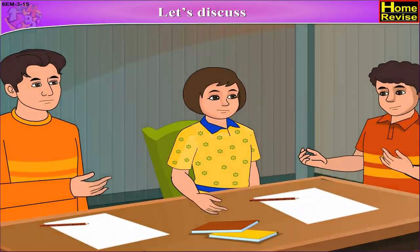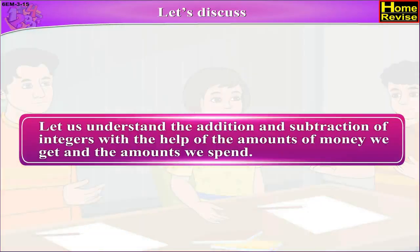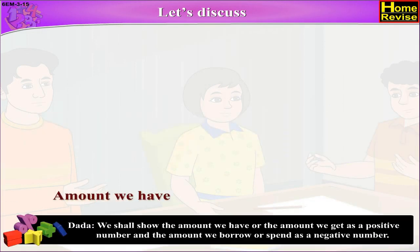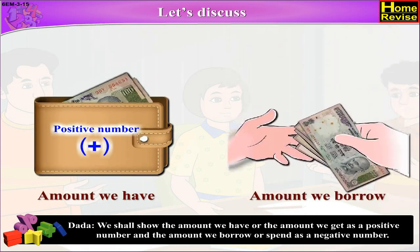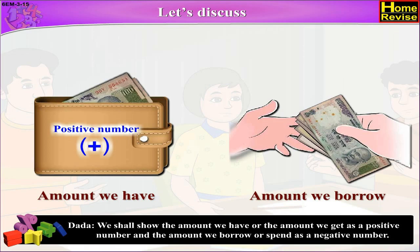Let's discuss. Let us understand the addition and subtraction of integers with the help of the amounts of money we get and the amounts we spend. We shall show the amount we have or the amount we get as a positive number, and the amount we borrow or spend as a negative number.